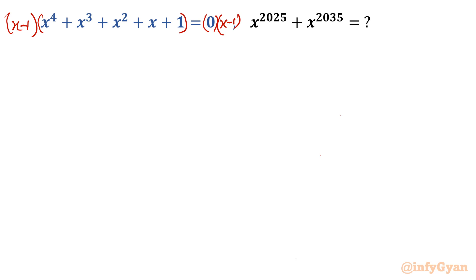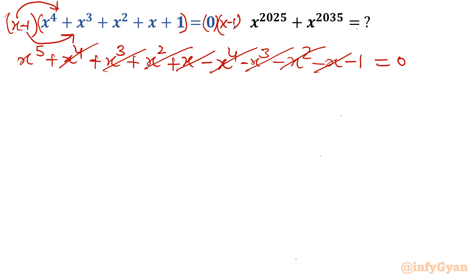So what is going to happen? RHS would be 0. Now let's expand. I am going to multiply x with the complete bracket: x power 5 plus x power 4 plus x cube plus x square plus x. Now multiplying minus 1 with the whole bracket, each term will come with minus sign: minus x4 minus x cube minus x square minus x minus 1. Right hand side is 0. You can easily see x power 4, x power 3, x square, these terms cancel out. What is left? x power 5 minus 1 equal to 0, or x power 5 equal to 1.